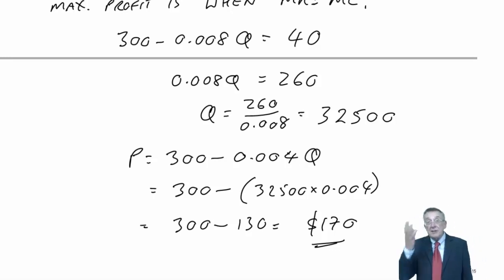And that will give us maximum profit. We could charge a higher price and we'd sell less. We could charge a lower price and we'd sell more. But maximum profit would be if we sell at 170.